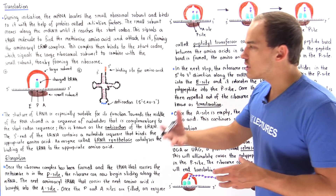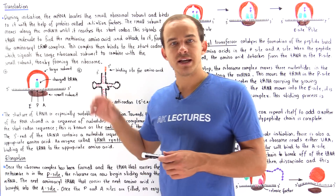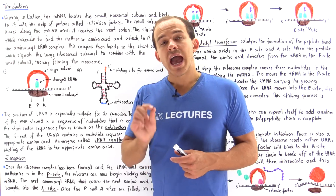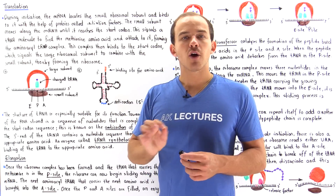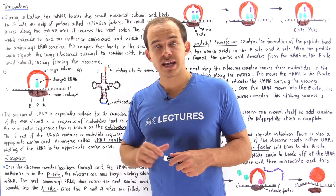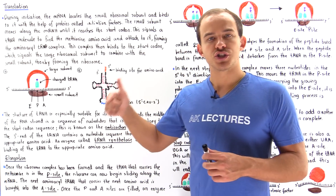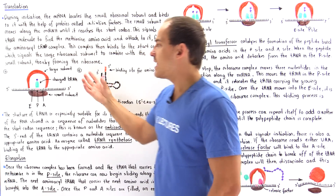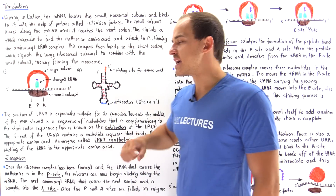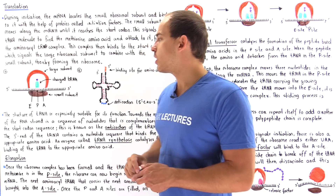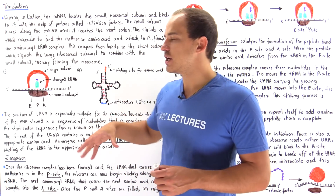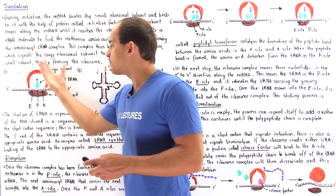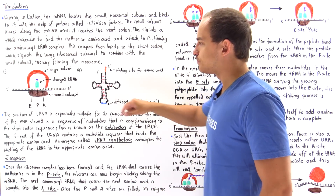Once our tRNA finds the methionine amino acid, it brings that methionine amino acid to our mRNA molecule, and the tRNA binds to our mRNA molecule. Once that takes place, the large subunit of the ribosome finds the small subunit, they associate, and they form a ribosome complex that is attached to that mRNA molecule. The initiation process involves these steps, and ultimately we form the ribosome complex.